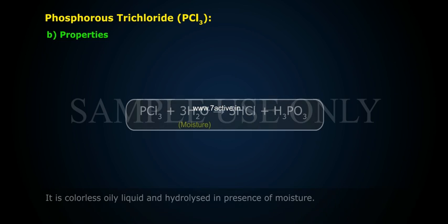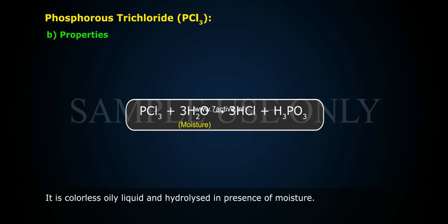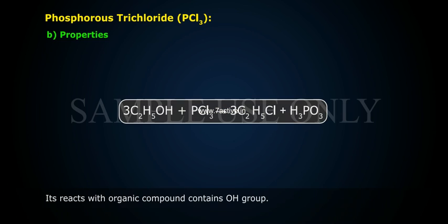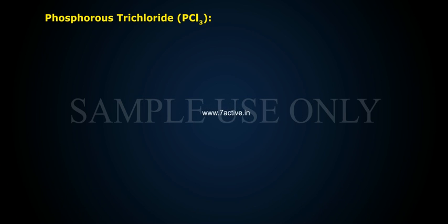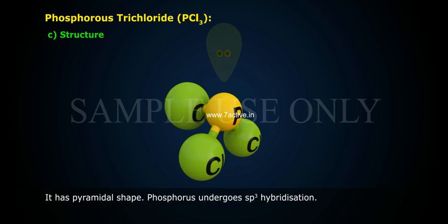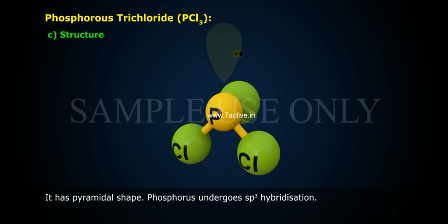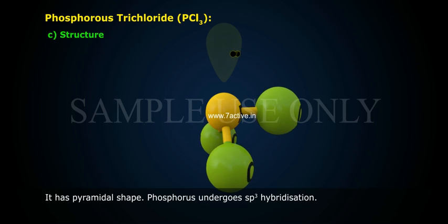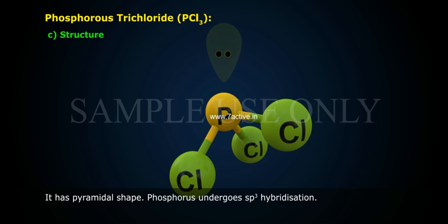Properties: PCl3 is a colorless, oily liquid that is hydrolyzed in the presence of moisture. It reacts with organic compounds containing OH (hydroxy) groups. Structure: It has a pyramidal shape, and phosphorus undergoes SP3 hybridization.